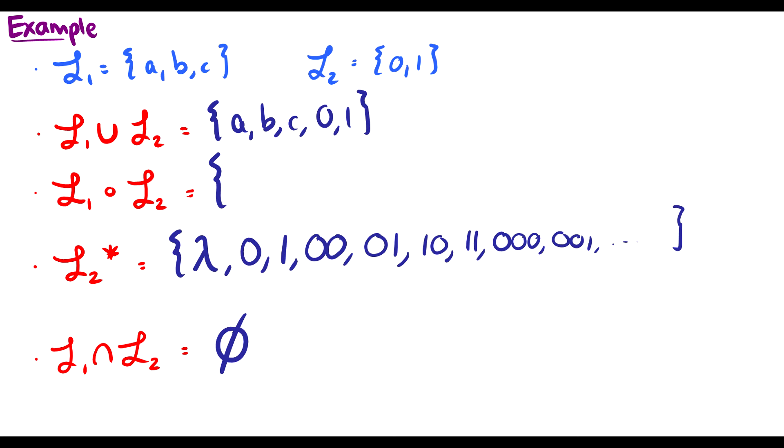And the concatenation says the first part is from L1, and the second part is from L2. So again, this is like the cross product. We can have A0, A1, or we can have B0, B1, or we can have C0 or C1. So those are the examples of the regular operators on languages.